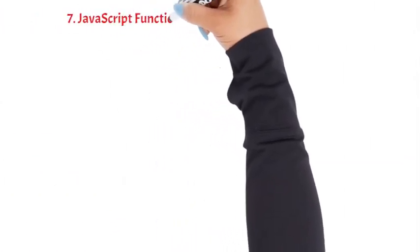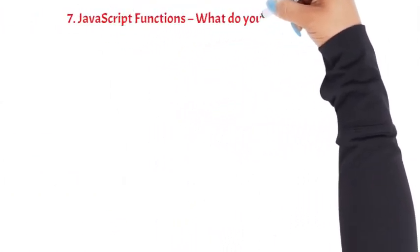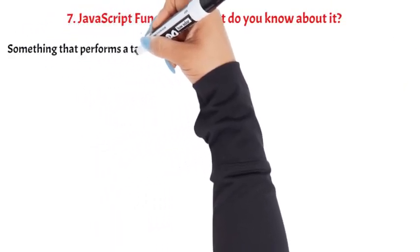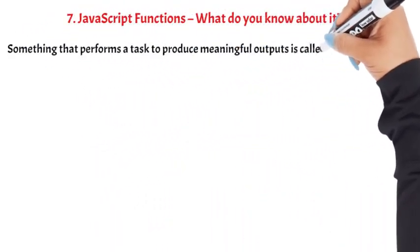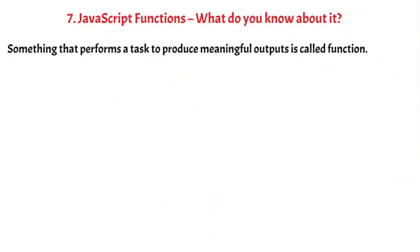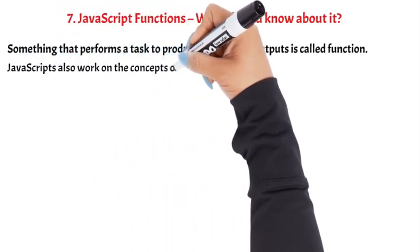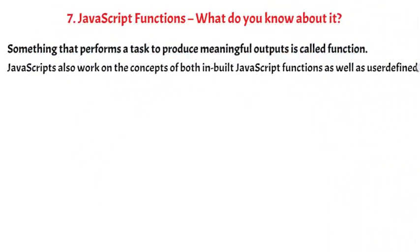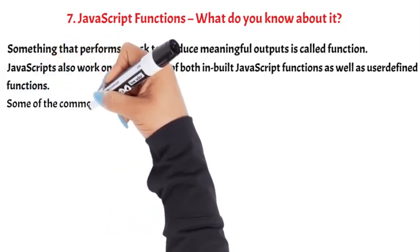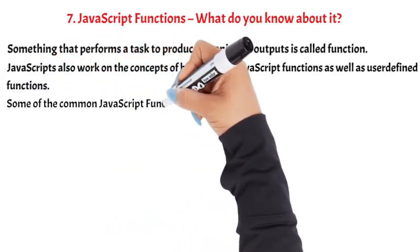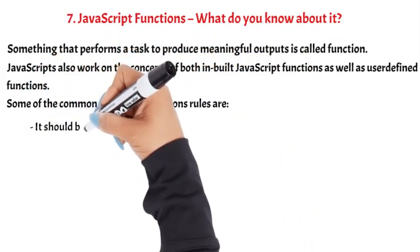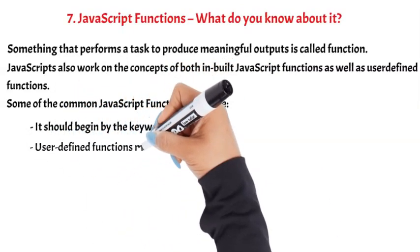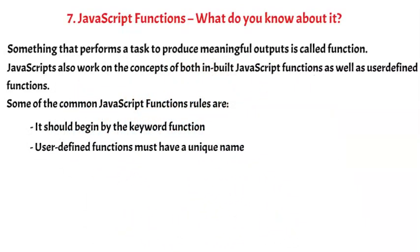Question 7: JavaScript functions — what do you know about them? Something that performs a task to produce meaningful outputs is called a function. JavaScript works on the concepts of both built-in and user-defined functions. Some common rules: it should begin with the keyword 'function', and user-defined functions must have a unique name.